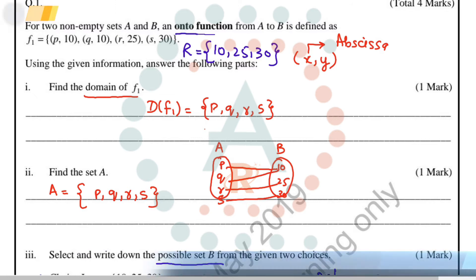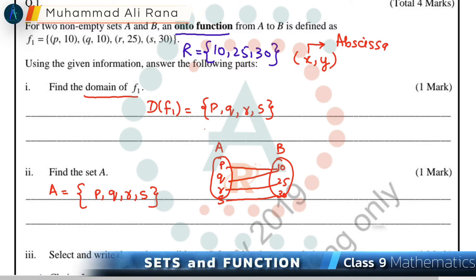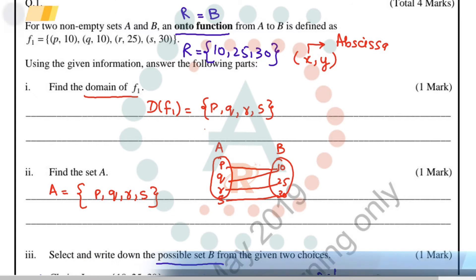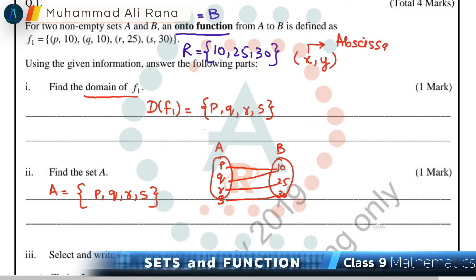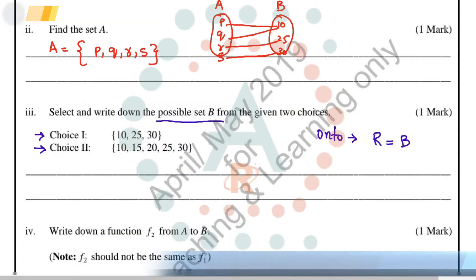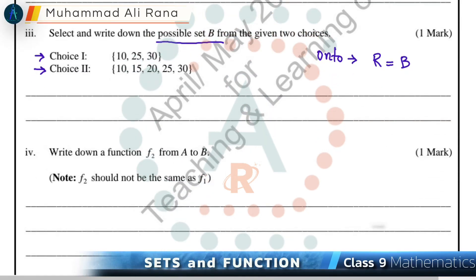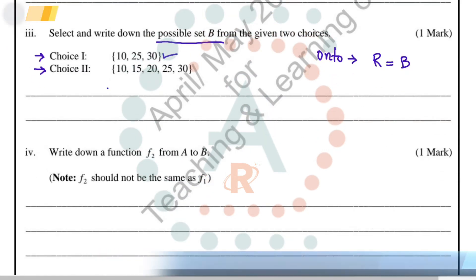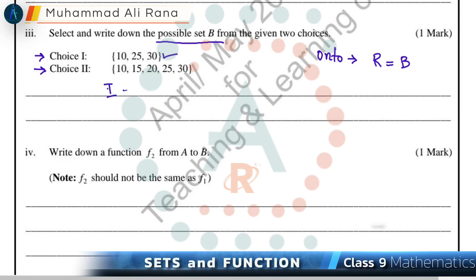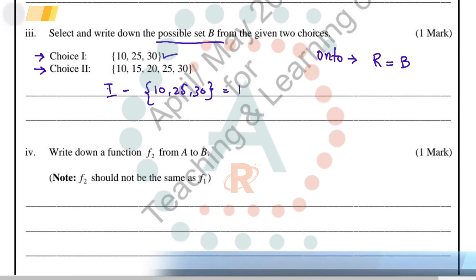Since the range of function f1 is {10, 25, 30}, and for an onto function the range must equal Set B, we can say that Choice 1, which states Set B = {10, 25, 30}, is the correct answer.